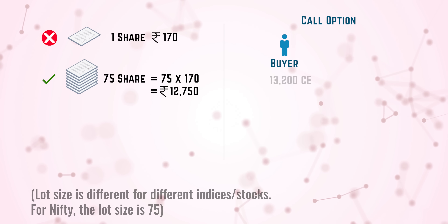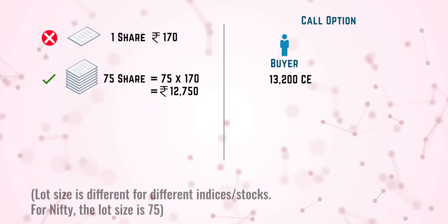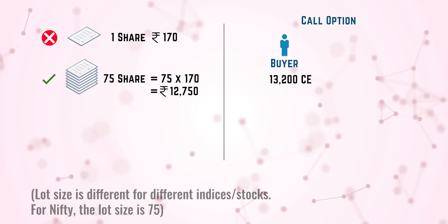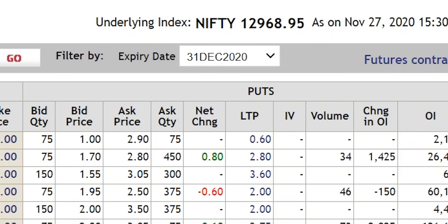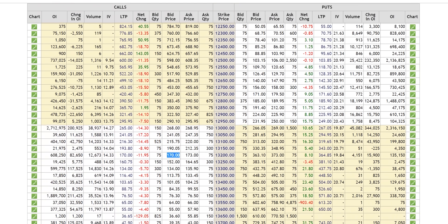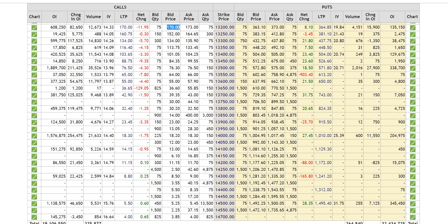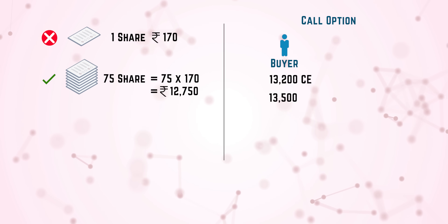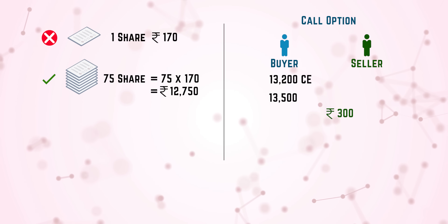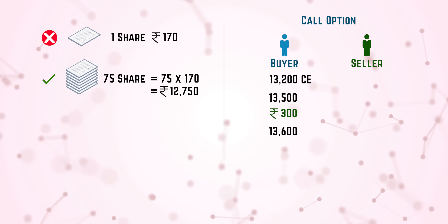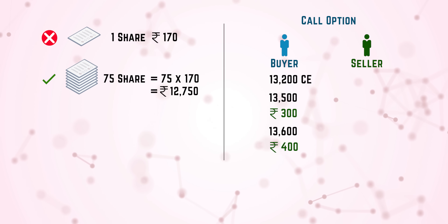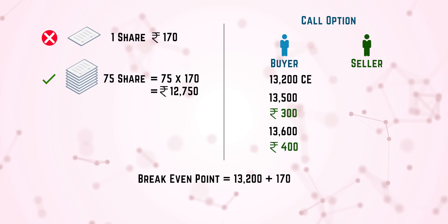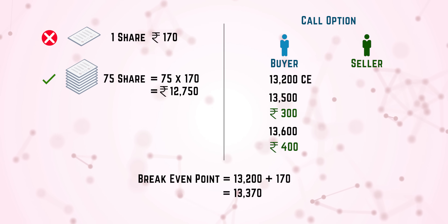Assume that you are buying the 13,200 call option at the rate of 170 rupees per share. You have to buy a minimum of 75 shares. You are the buyer of a call option. At the end of the month — that is on December 31st — if the market closes above 13,200, we have to see where it is closing. If it closes 300 points above 13,200, you will get 300 rupees from the seller. If it closes 400 points above 13,200, you receive 400 rupees. What is your breakeven? Because you already paid 170 rupees, your breakeven will be 13,200 plus 170, which is 13,370.